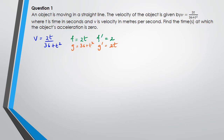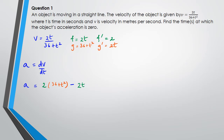The velocity function when you differentiate it gives you acceleration, so acceleration is the change in velocity over change in time. Using the quotient rule: f dash multiplied by g, which is 2 times (36 plus t²), minus f multiplied by g dash, which is 2t times 2t, and the whole thing divided by g squared, which is (36 plus t²) squared.